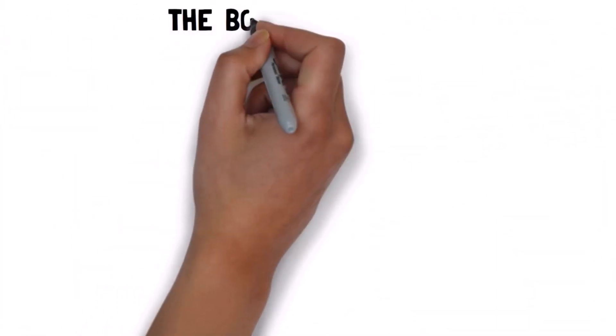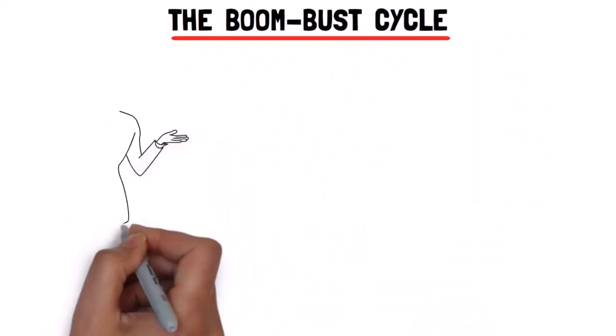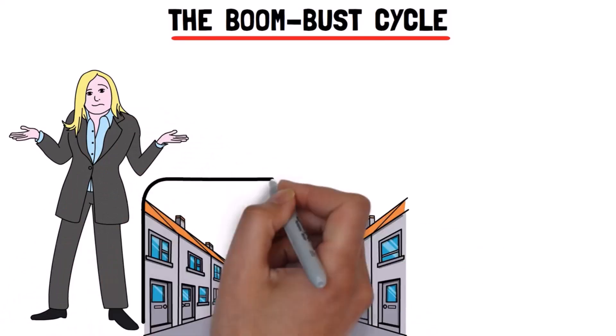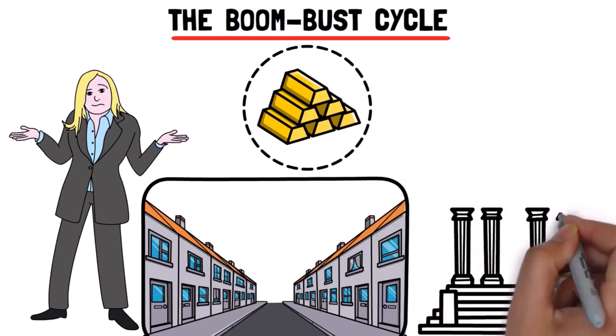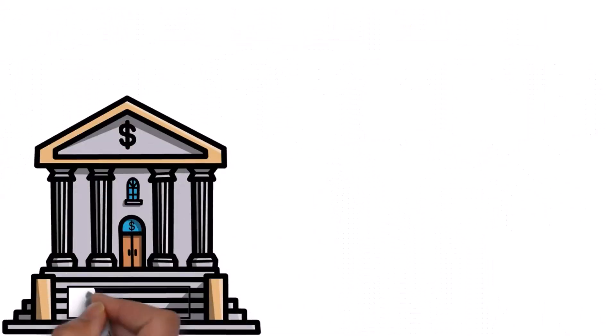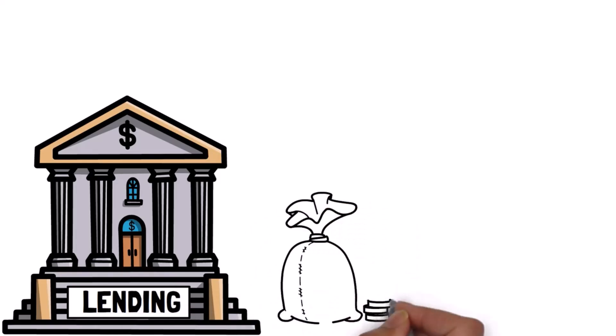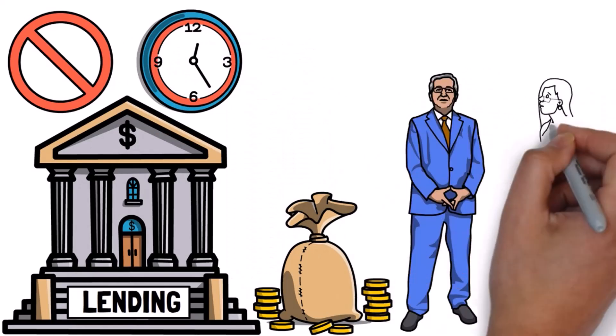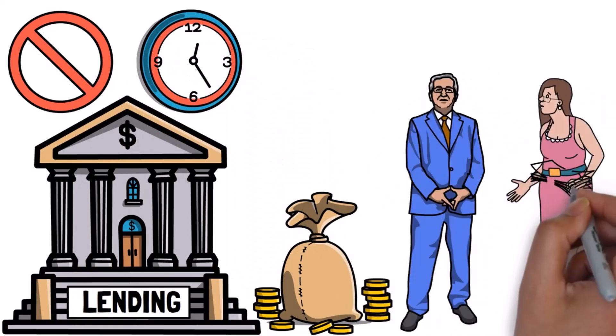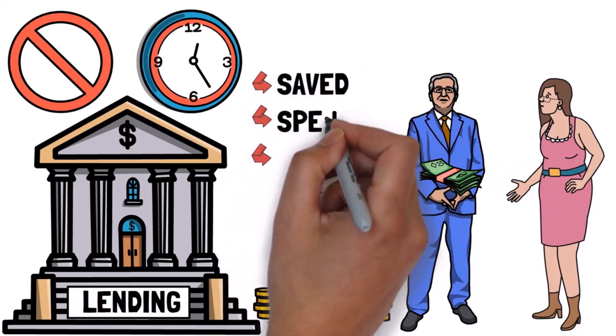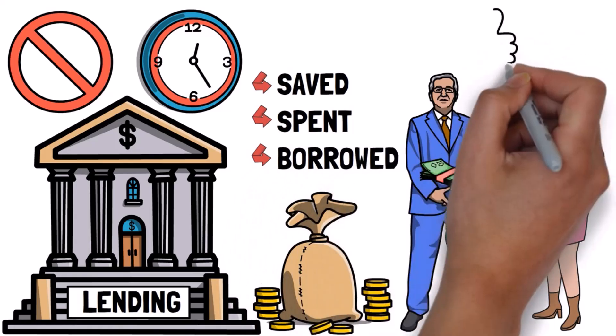So, first the theory, the boom-bust cycle. Let's break it down in simpler terms. Imagine a small, self-contained town where everyone has some gold stored in a local bank. Before the bank introduced lending, if someone in the town wanted to borrow money, it had to be money that someone else wasn't using. If John wanted to borrow from Sally, Sally couldn't spend the money she lent him until he paid it back. This kept things stable. People saved, spent, and borrowed based on their own needs and choices.